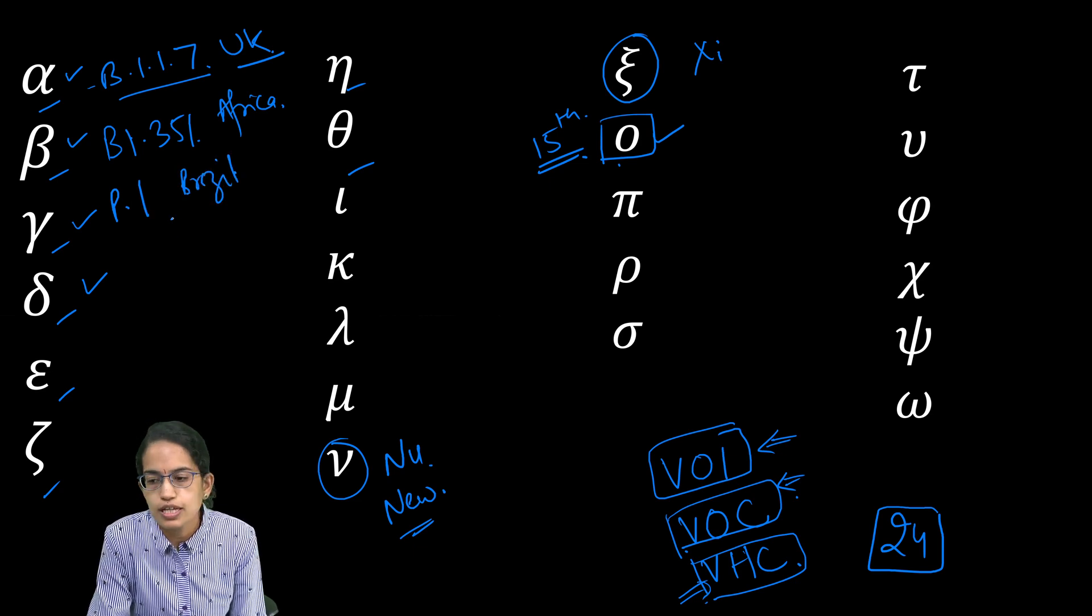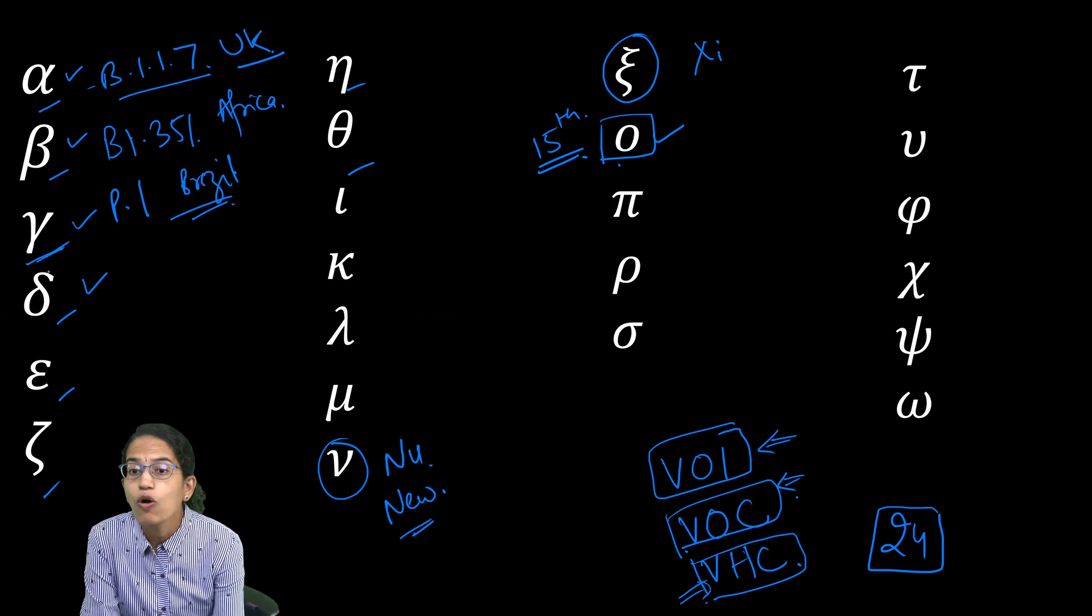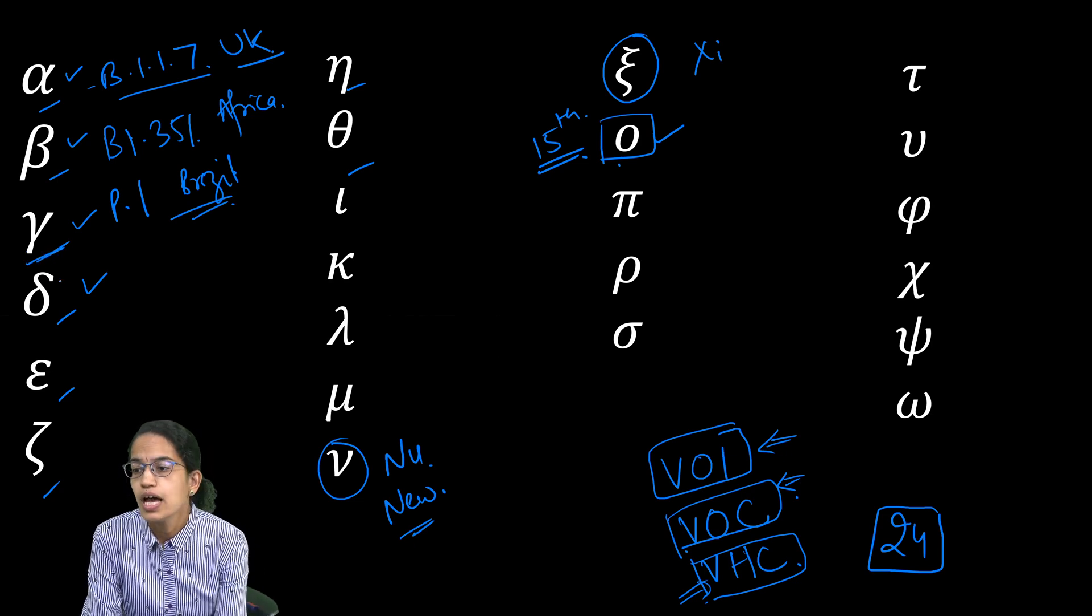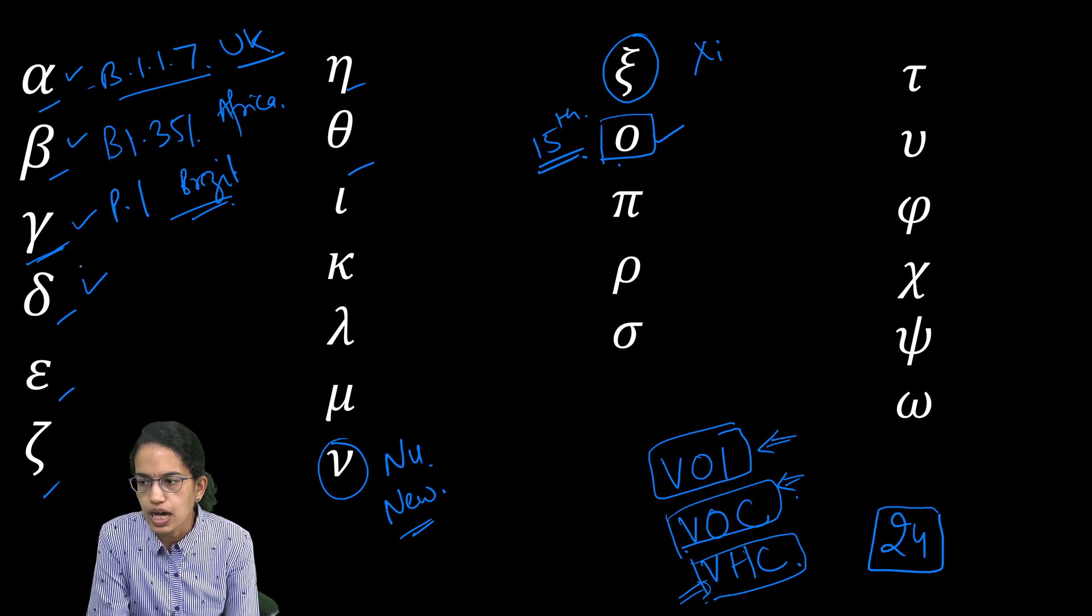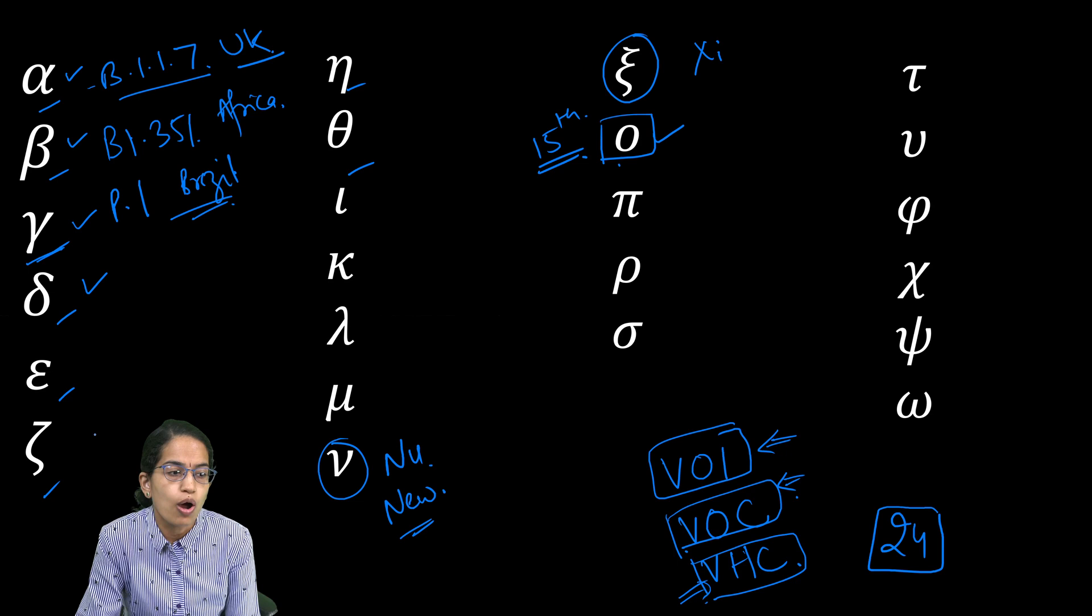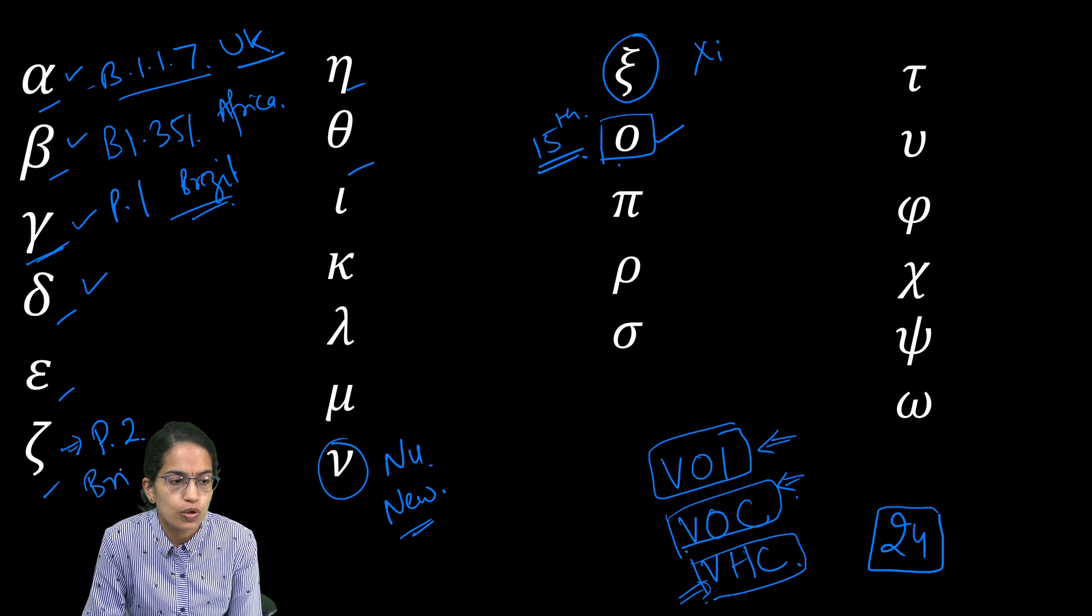Those originating from Brazil had similar variations. We saw that P1 was a variation from Brazil and this was gamma variant of concern. And then we had another variant which was zeta which was seen from again the regions of Brazil and it had a lineage of P2. So this was zeta from Brazil again.